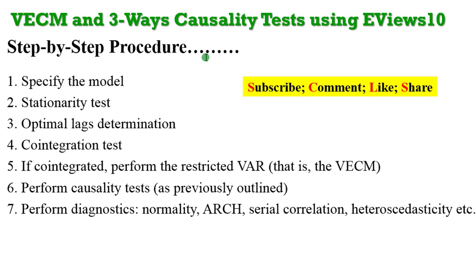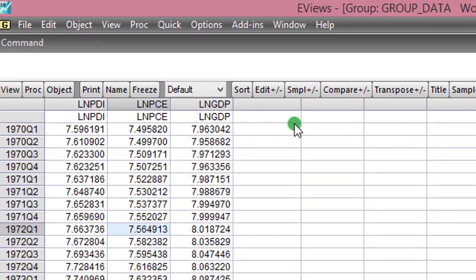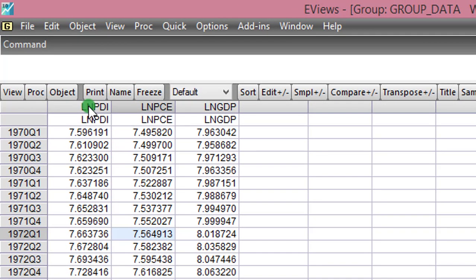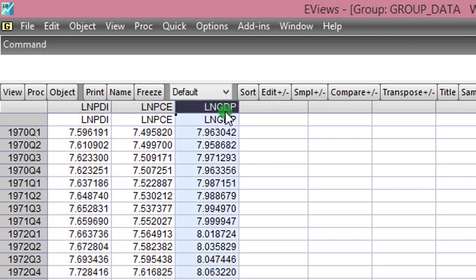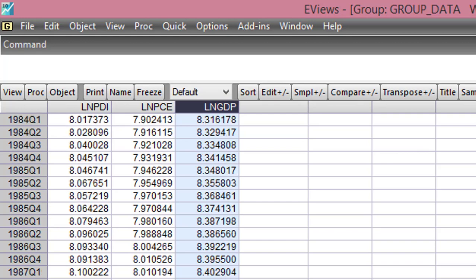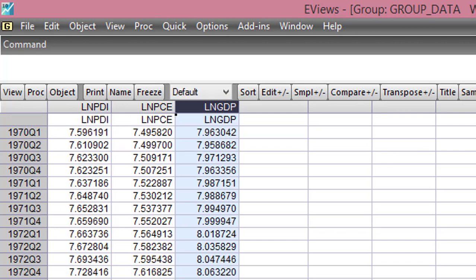From the prerequisite videos I encourage you to watch, I've already over-emphasized steps one to four, so I'm going to skip those procedures in this tutorial and go straight to steps five, six, and seven. Now let's move over to EViews and look at a practical example. The three variables I'll be using are PDI, PCE, and GDP in their log forms, with quarterly data from 1970 Q1 to 1991 Q4.